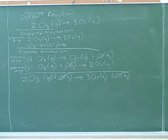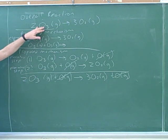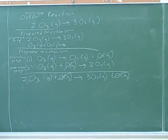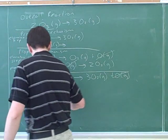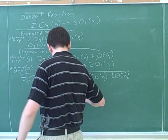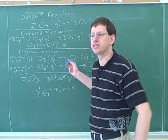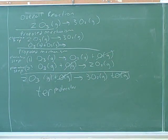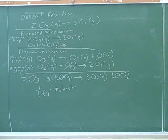Those terms of molecularity apply to the elementary steps, not the overall reaction. Is it tri- or termolecular? The convention is termolecular — you might have heard of 'tertiary,' which is another root used for three. There are no examples of termolecular steps on the board here, but you will see them occasionally. Higher molecularities are not known, so we don't need to learn about tetramolecular — how likely is it that four things would bump into each other in just the right way?